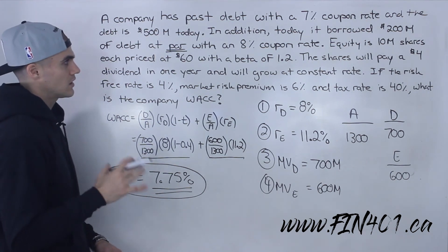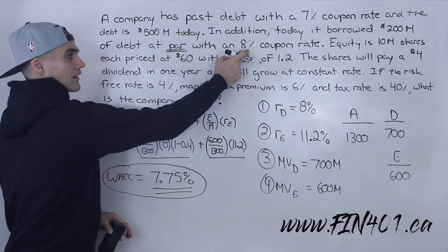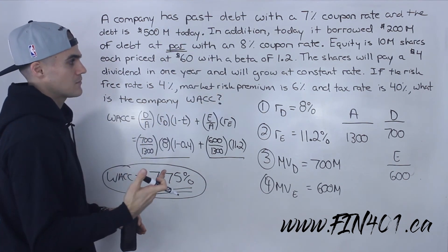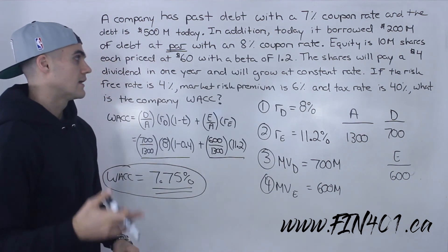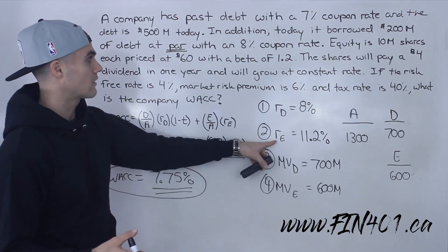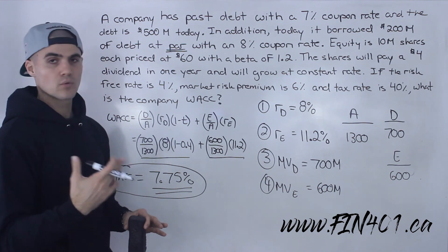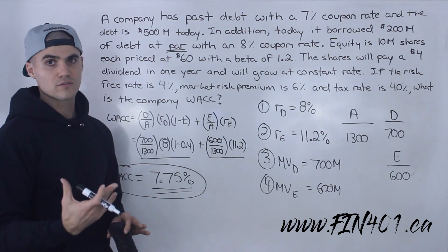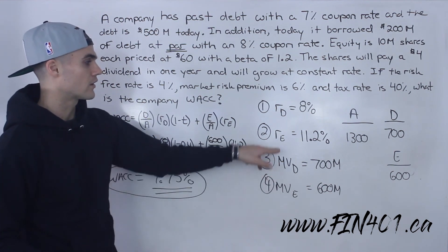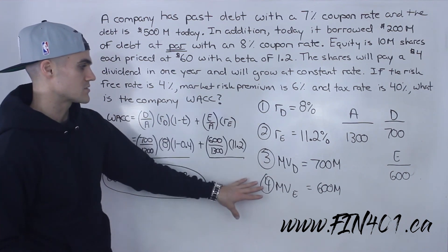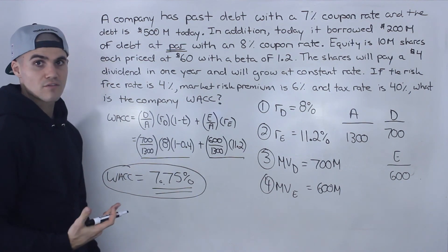So that's a fairly tricky question with a couple of tricks in it. The first biggest trick: because the debt issued today was issued at par, the coupon rate equals the yield to maturity, which equals the cost of debt — so 8% is the cost of debt and the 7% coupon rate on the previous debt is irrelevant. The second trick: for equity, they gave information for both CAPM and DDM, but without the growth rate, we couldn't use DDM, so we used CAPM to get 11.2%. Then market values of debt and equity, plug into the WACC formula, and the answer is 7.75%.